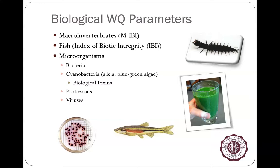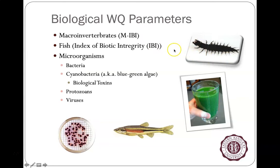Biological water quality parameters — we'll discuss these more in later videos. We can find helgramites in streams; if we find them, we know water quality is good. Certain fish like red-sided dace are very pollution sensitive. There are macro-invertebrates called water pennies — beetles you wouldn't notice unless looking for them — whose presence indicates clean water. Aquatic worms and many crayfish are quite pollution tolerant, so their presence tells us less.